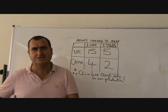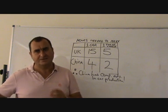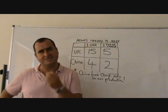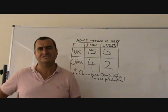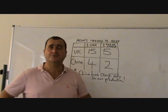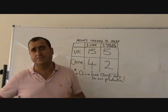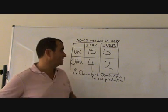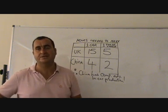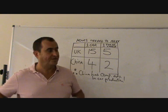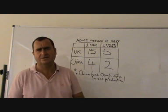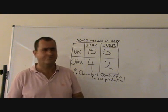So the UK should specialise in cheese and China in cars, and they should trade. Assuming no transport costs and that the terms of trade allow a price advantageous to both countries, they can both benefit from trade. That's the basis of comparative advantage theory.